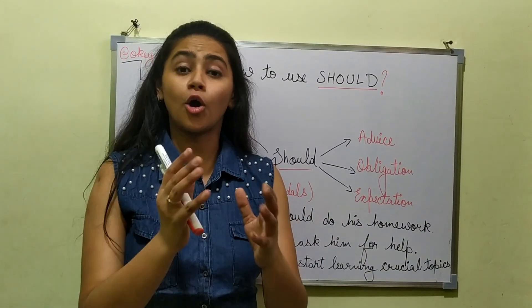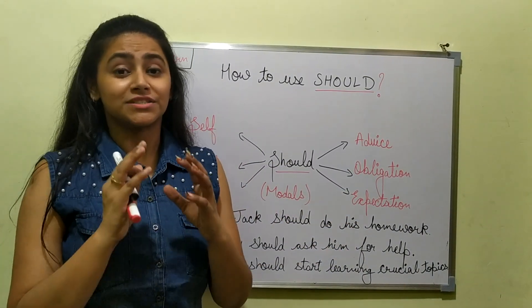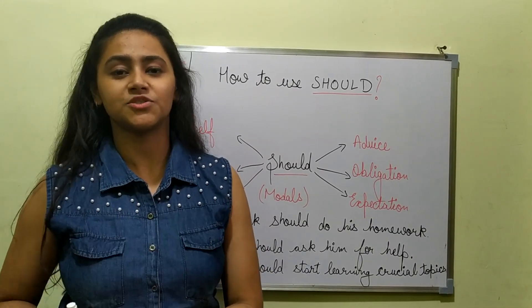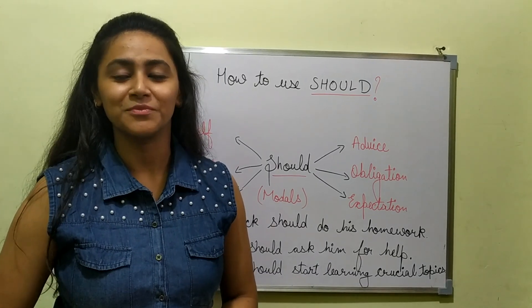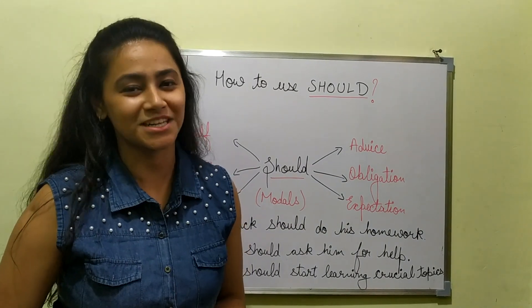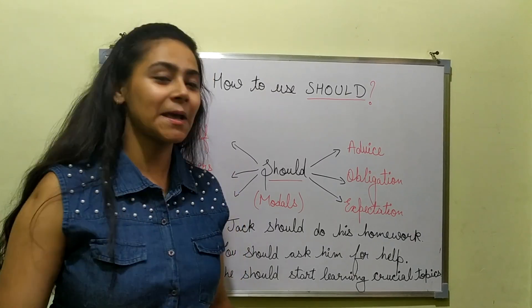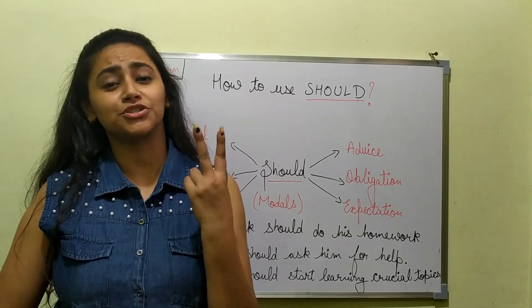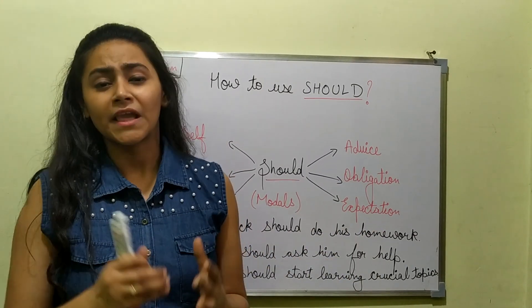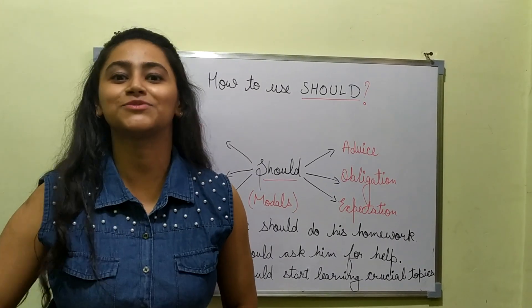The second usage is obligation — when you have any duty or any responsibility. That time also we use the word 'should.' When you are obliged with some responsibility, you need to use 'should.' For example, when your mother says, 'You should complete your homework before you sleep.' So we understand that 'should' is used for advice, for obligation, and for expectation. When you have some expectations from others, you put the word 'should' to make it clear that it is your expectation.